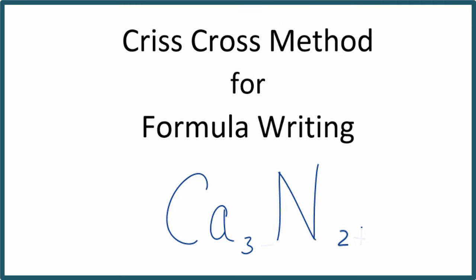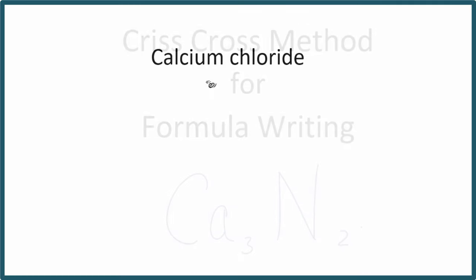The crisscross method is really useful when we're trying to write the formula for ionic compounds. So take, for example, calcium chloride. We know that calcium is Ca, and that chlorine, the chloride ion, that's Cl.